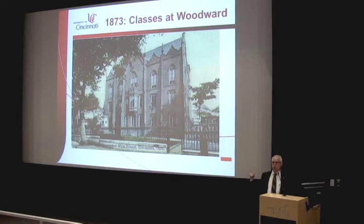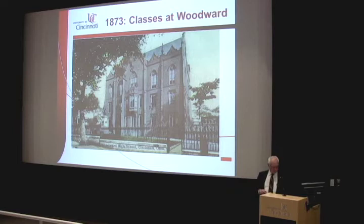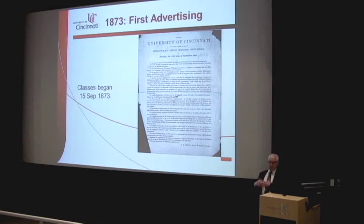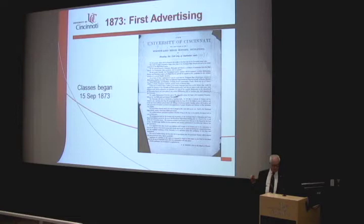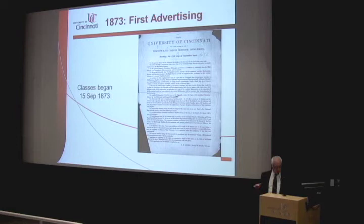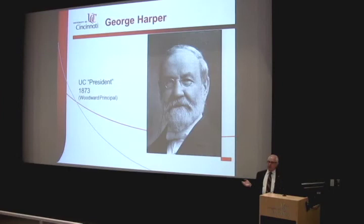University of Cincinnati classes finally opened in September 1873 at Woodward High School — not the building that exists today, but the old Woodward High School building on essentially the same piece of property on Upper Broadway. There were more than 150 applicants for the very first class, but only 58 were accepted. Of those 58, there were 40 women, 18 men, and 5 instructors, all drawn from the existing Woodward faculty. For that first year, the classes offered were chemistry, natural philosophy, Latin, Greek, French, and German.